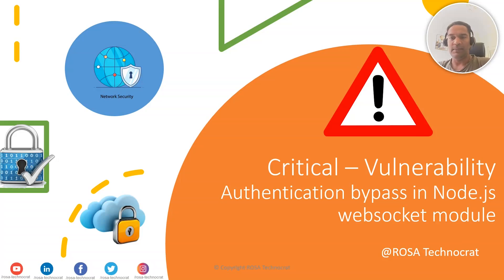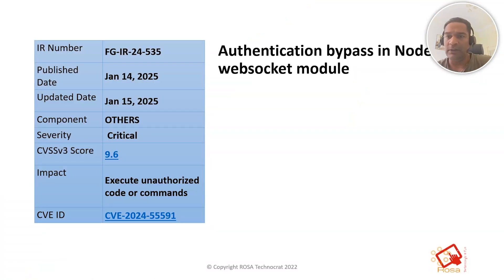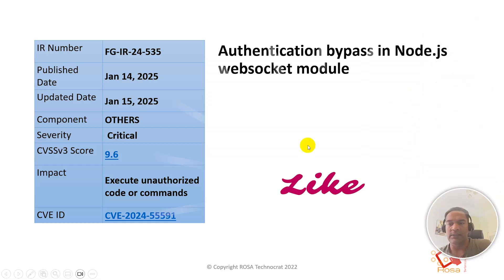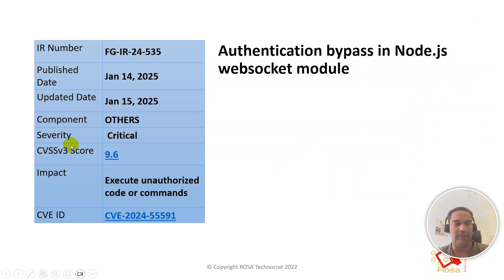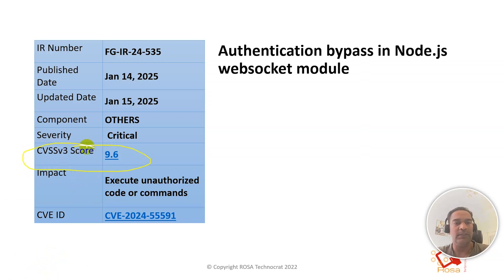Let's start getting more details about this vulnerability — how it can affect you and how you should take care and avoid it. This authentication bypass vulnerability in Node.js is very critical. The CVSS score for this vulnerability is 9.6, as you can see here, and the severity is rated Critical. We should have a workaround or focus on this vulnerability as soon as we can.